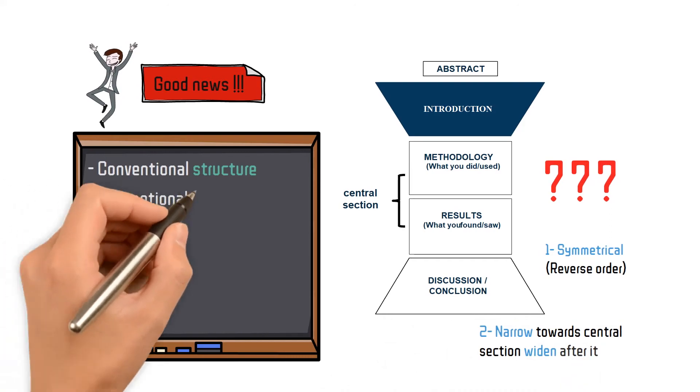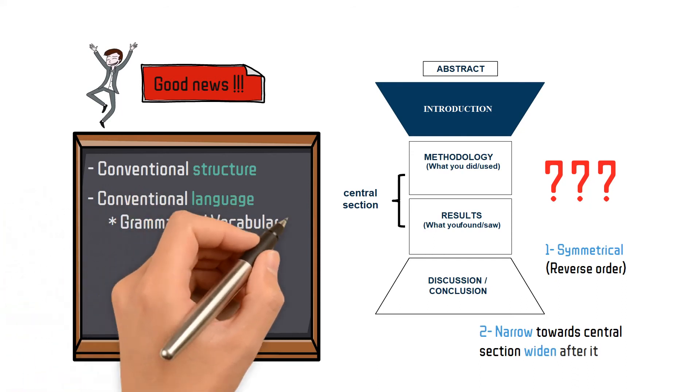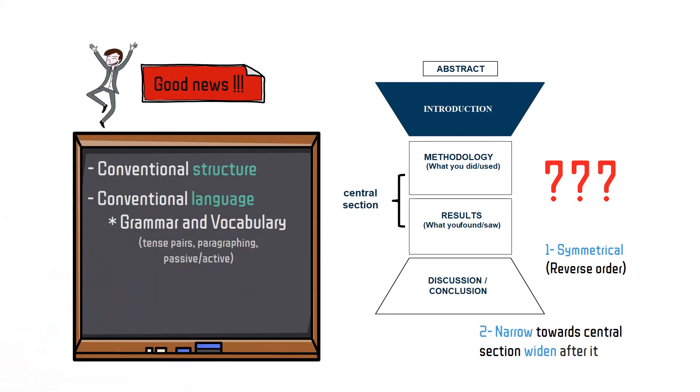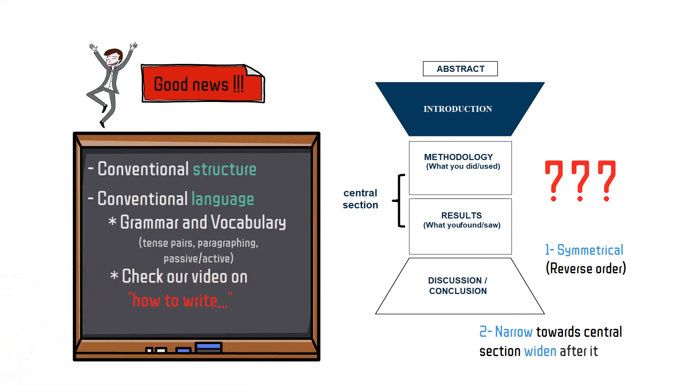Because the research writing is very conventional, the amount of grammar and vocabulary you need to learn is very small. You'll only have to master or pay attention to tense, paragraphing, and active voice. Please watch our video on how to write a paper. The link is provided in the description.